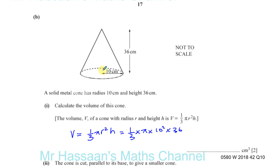Make sure we're using the radius, not the diameter — it's 10 cm radius, so that's fine. We compute: 1/3 × 36 = 12, then 12 × 10² = 1200, giving us 1200π. That's the exact form of the volume.